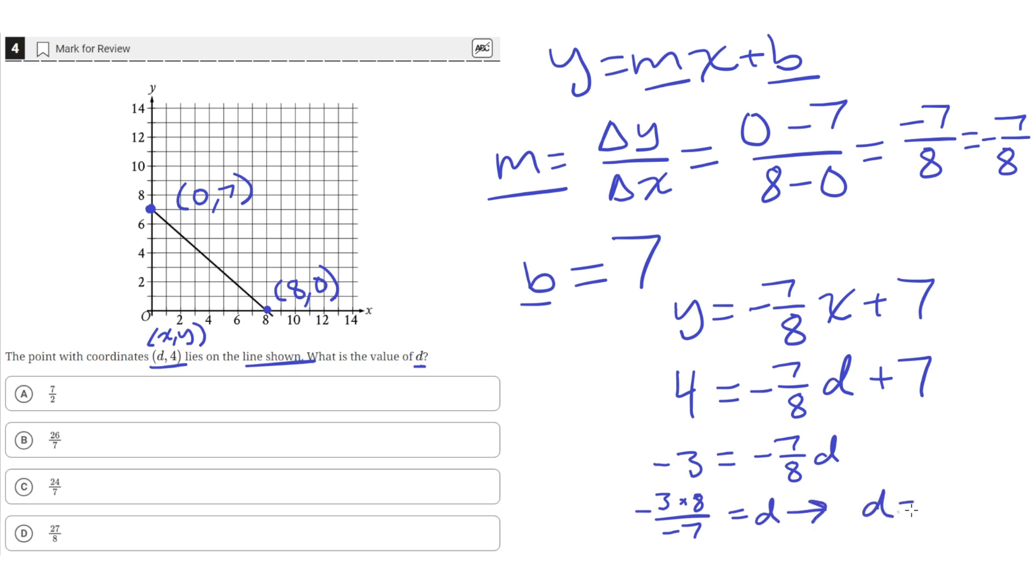So that means d is equal to 24 over 7, since negatives cancel out, and 3 times 8 is 24. So d equals 24 over 7, which is answer choice C.